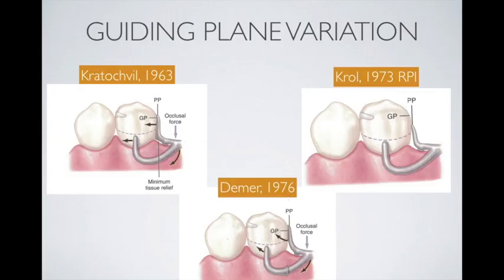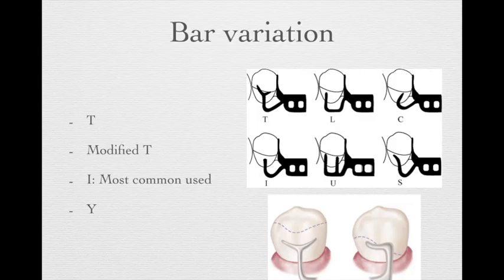There are some different guidelines advocated by different doctors, but these are advanced topics. In our school, we use the wrought design shown on the upper right. There are also variations of the bar type — we most commonly use the I-bar in the RPI system. However, depending on different undercut locations, it could be T, modified T, or Y shape.